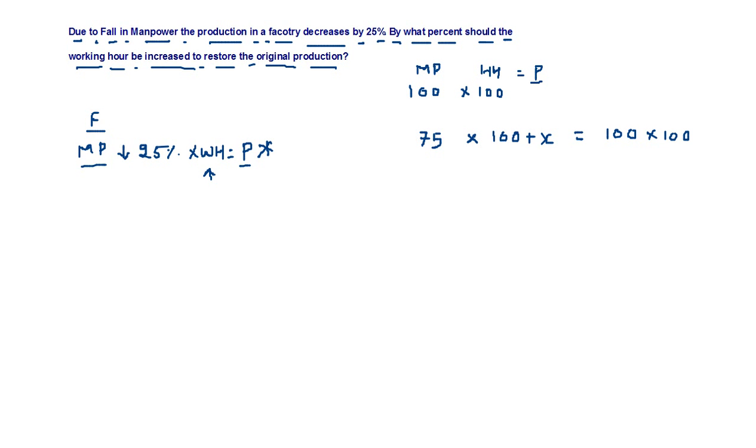This is the reduction in the manpower, so this will be the increase in the working hours. Solving this, 75 into 100 plus x is equal to 100 into 100.